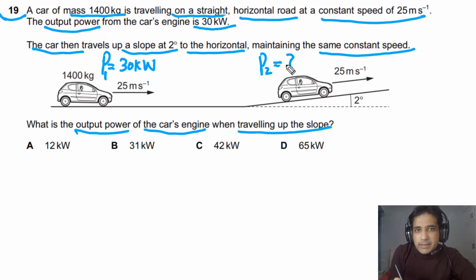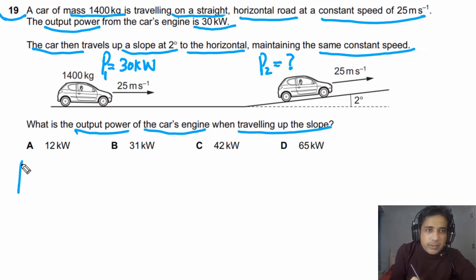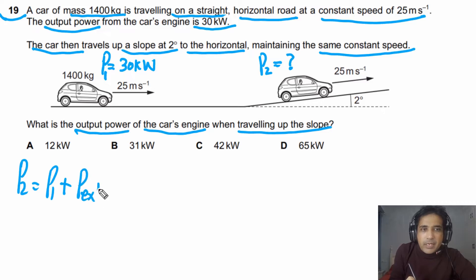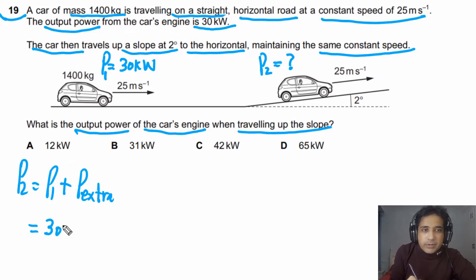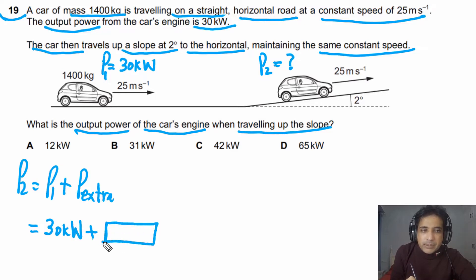The car has to provide extra power. So we can write down that P2 equals P1 plus the extra power required up the slope. If we can find the value of P extra, we can calculate P2. P1 is already given to us as 30 kilowatts, so we need to calculate P extra.